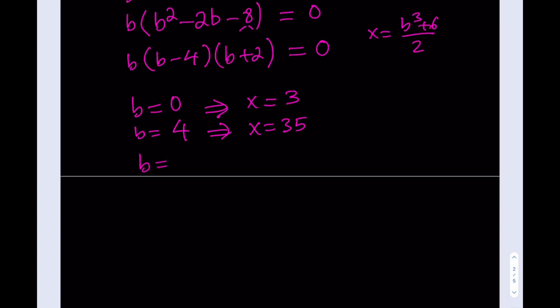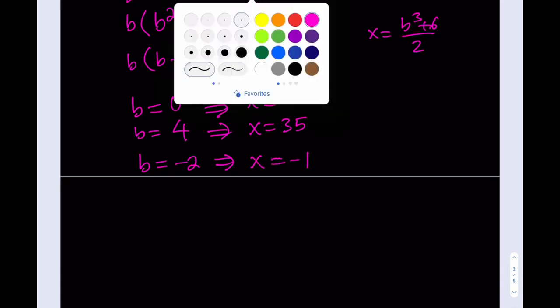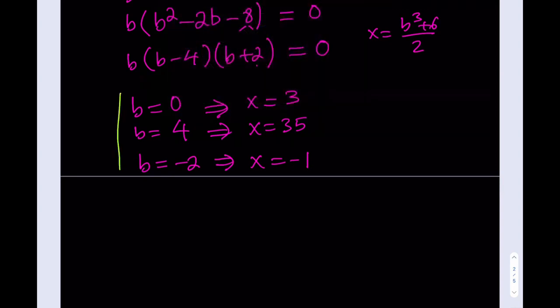So, these are all the solutions and we are done. I hope you enjoyed the video. This is a very interesting method to solve these kinds of equations. And here's the results. We have three solutions, 3, 35, and negative 1.